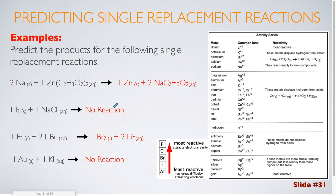Here we have a couple of examples that are already solved. Here I had sodium, which was the element by itself, and it was attempting to switch with zinc. I want to find each of these elements on the activity series — sodium is right here, and zinc is further down. Since sodium is higher up and therefore more reactive than zinc, it replaced it within that compound. Sodium is now bonding to the acetate, and zinc is now by itself.